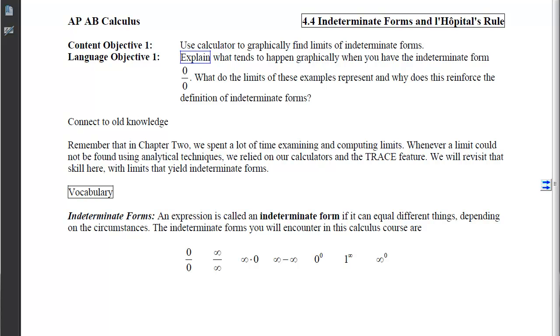We will revisit that skill here with limits that yield indeterminate forms. So what is an indeterminate form? An expression is called an indeterminate form if it can equal different things depending on the circumstances.